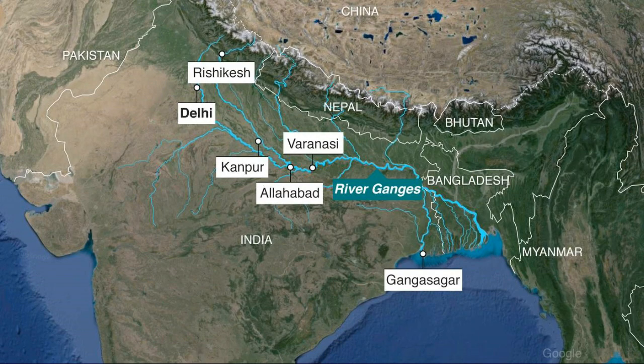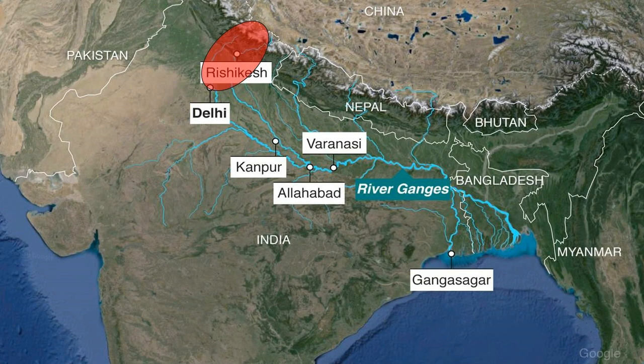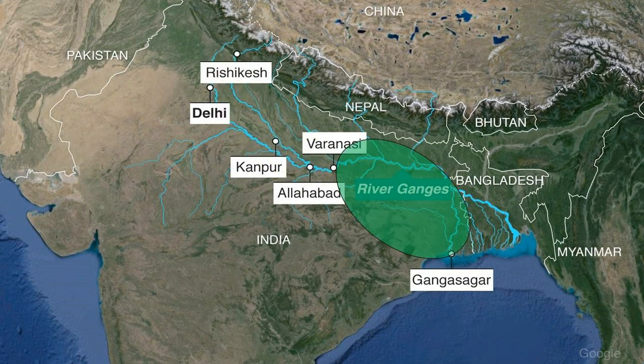The river is accordingly divided into three stretches: the upper stretch from Gormuk to Haridwar, the middle stretch from Haridwar to Varanasi, and the lower stretch from Varanasi to Gangasagar.